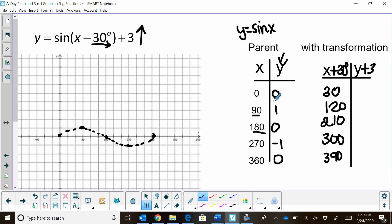Now I'm going to add 3 to my y-coordinates. So each y-coordinate I'm just going to add 3. So 0 plus 3 is 3, 1 plus 3 is 4, 0 plus 3 is 3, negative 1 plus 3 is 2, and 0 plus 3 is 3.